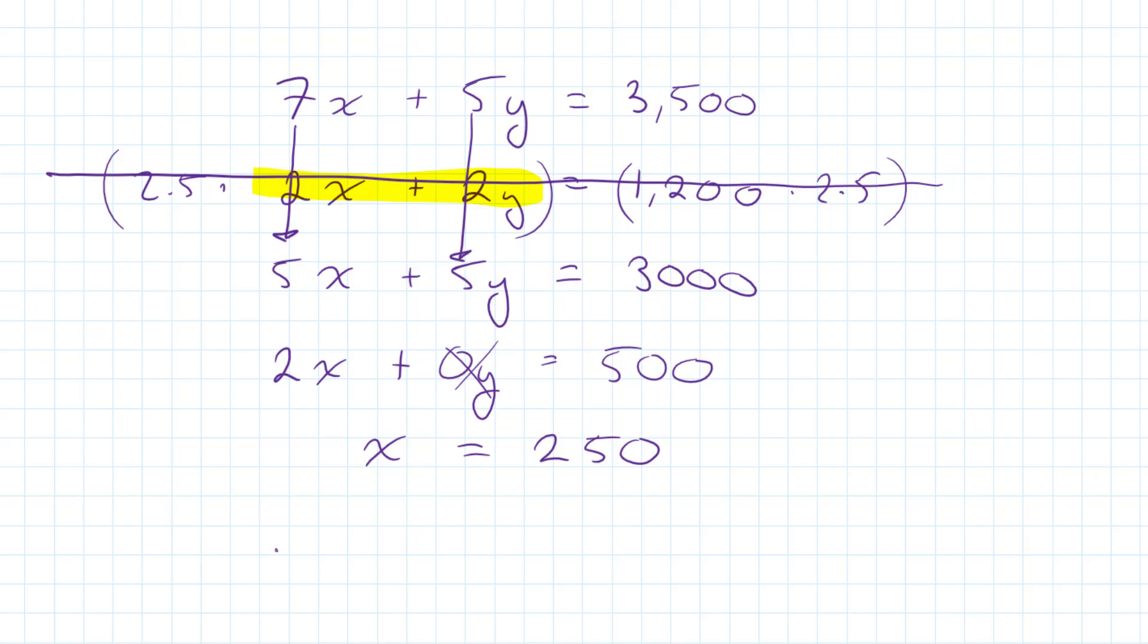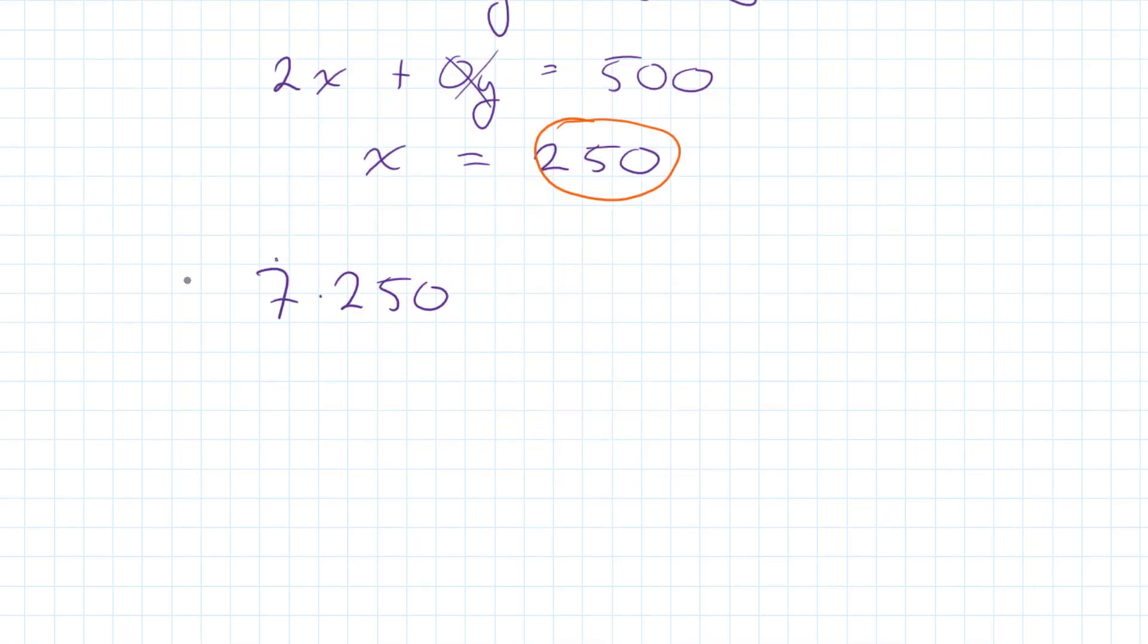And we can put that 250 into either equation and we're going to get the same y. So, let's plug the 250 right into here. 7 times 250 plus 5y is equal to 3,500. We can do the math.